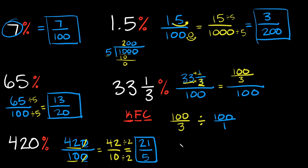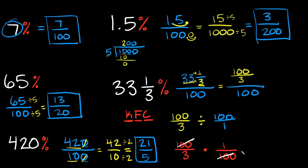So I keep my first fraction — 100 over 3 stays as 100 over 3. I flip my second fraction — so instead of 100 over 1, I have 1 over 100. And change means instead of dividing we multiply. So now we have 100 over 3 times 1 over 100. Multiplying two fractions means you multiply straight across. Before multiplying, we can cancel — whenever you have the same number on top and bottom, you can cross those out because they cancel each other out.